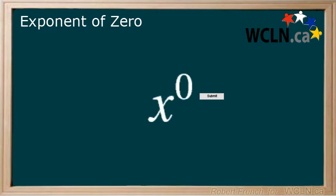In this tutorial we will be looking at the exponent 0. What happens when the exponent is 0? Let's take a look at a few quick examples.